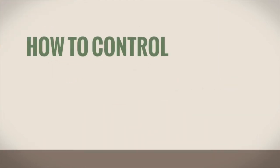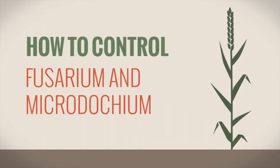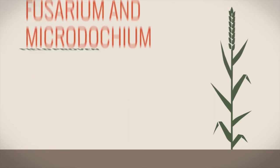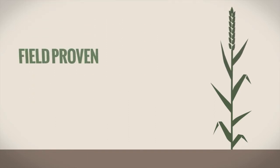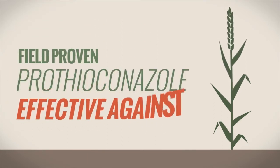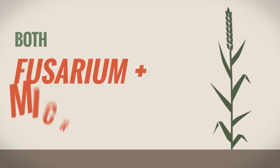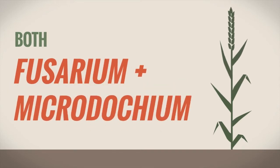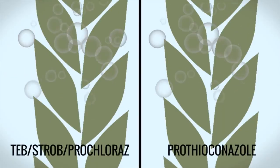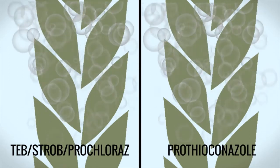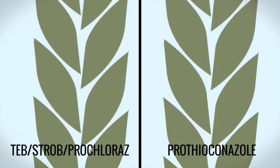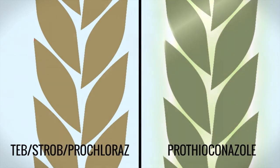How to control Fusarium and Microdocium. Prothioconazole has been shown to be the only effective treatment for Fusarium and Microdocium in winter wheat. Alternative chemistry such as Tebuconazole will not provide protection against Microdocium, while resistance to strobilurins means they too are no longer an effective treatment for the disease.